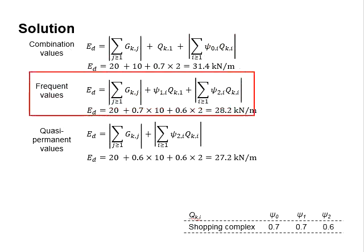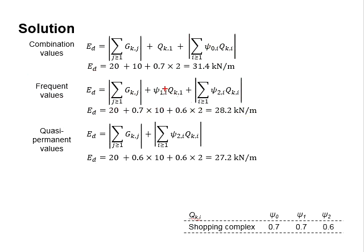As for the frequent value, the leading variable is to be multiplied with psi 1 and the rest of the variables are considered as quasi-permanent actions. With that, you will obtain 28.2 kN per meter.